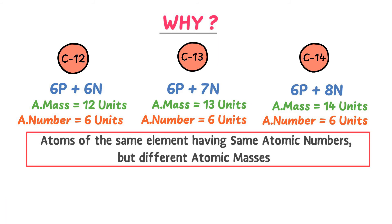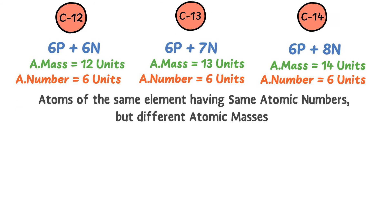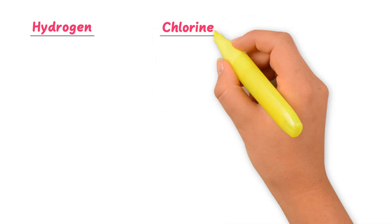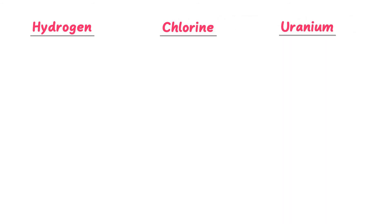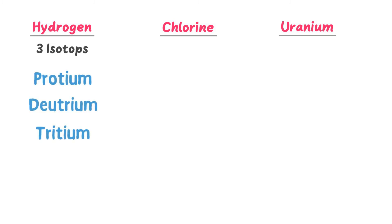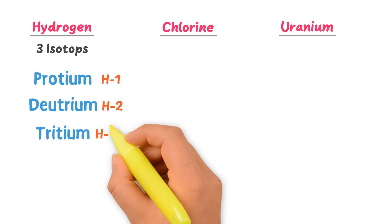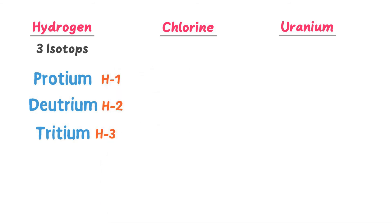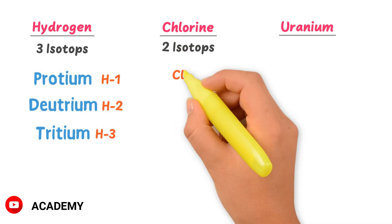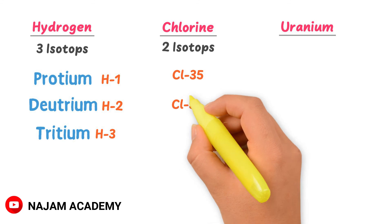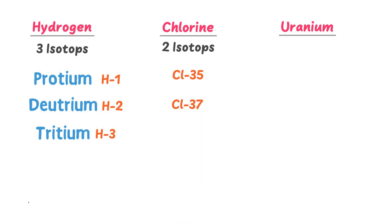Now let me teach you isotopes of hydrogen, chlorine, and uranium. There are three isotopes of hydrogen: protium, deuterium, and tritium — hydrogen-1, hydrogen-2, and hydrogen-3. There are two isotopes of chlorine: chlorine-35 and chlorine-37. There are also three isotopes of uranium: uranium-234, uranium-235, and uranium-238.